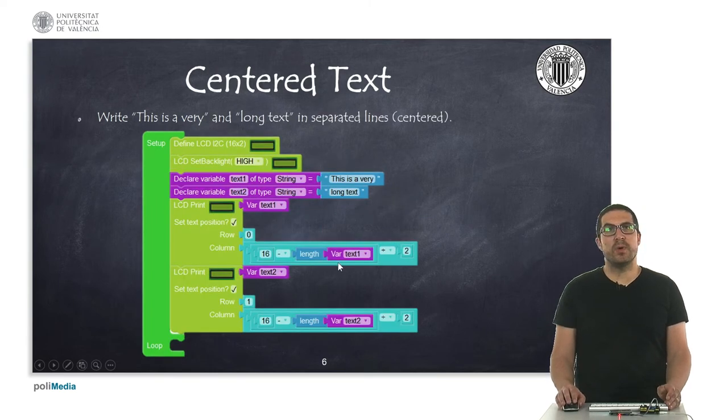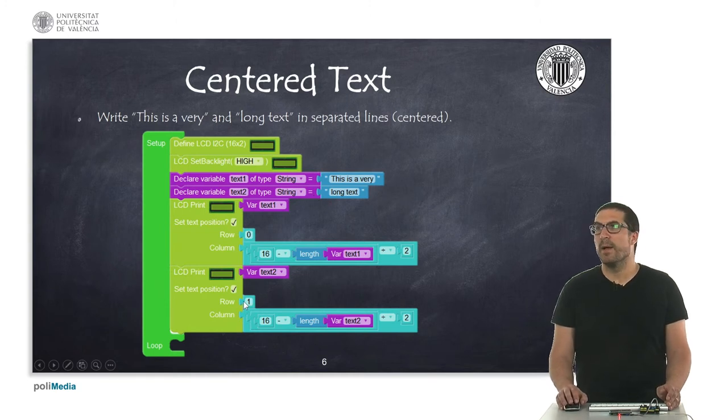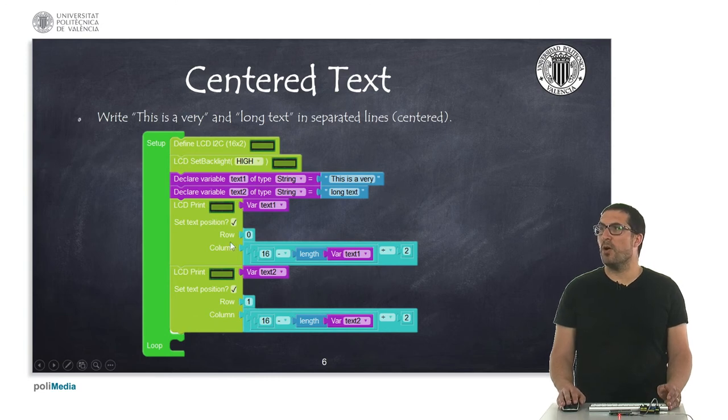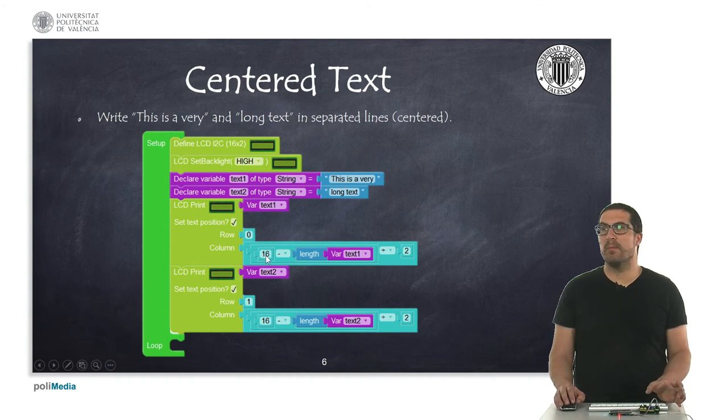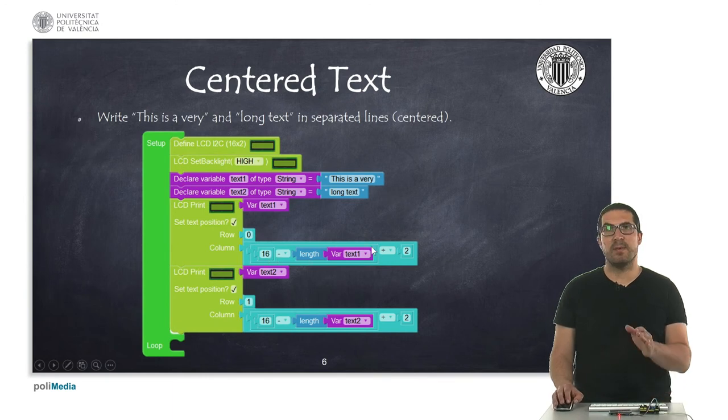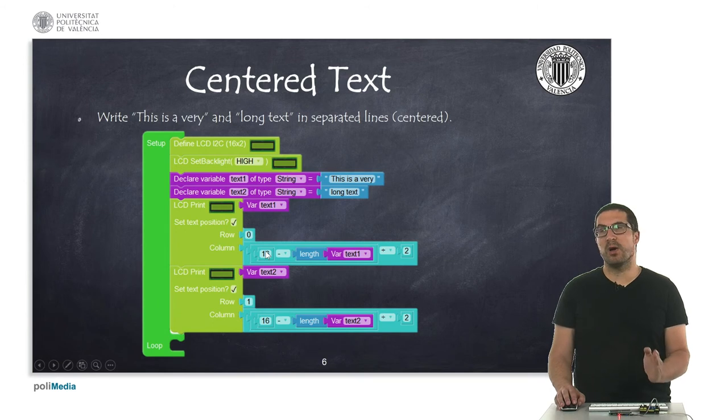Then in this example, we are doing a similar thing. We are just showing the same text, but in this case we said that this string will be shown on first row, so it's row zero, and long text will be shown on row one. In addition, we are using this computation to center the text. It's always the number of characters that fits on the screen minus the length of text and then divided by two. This will be the corresponding column.